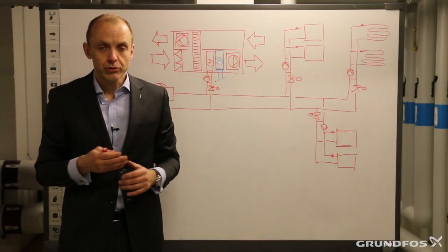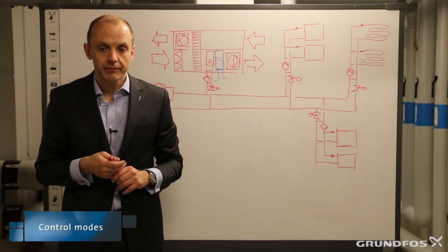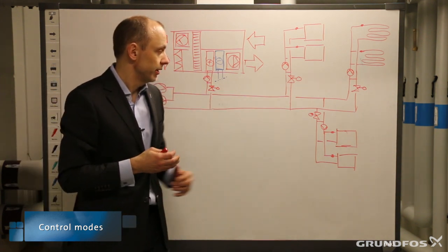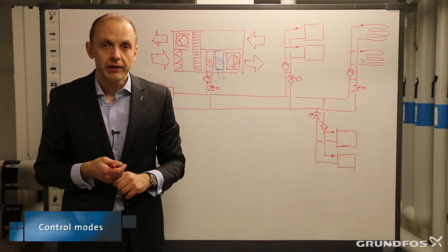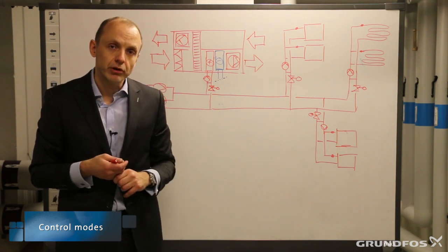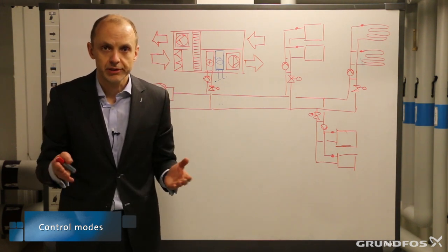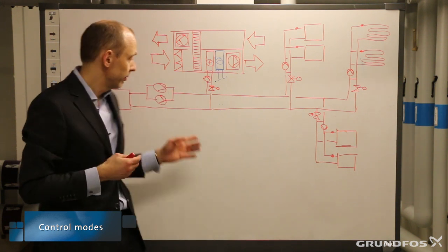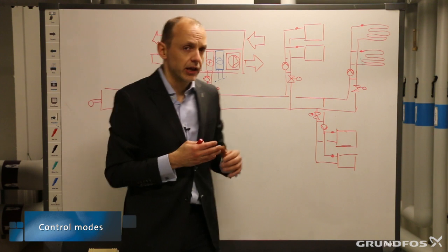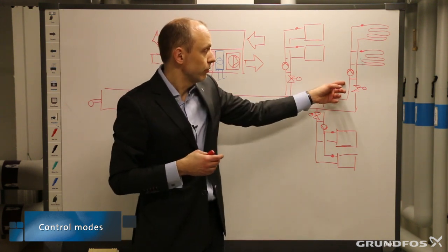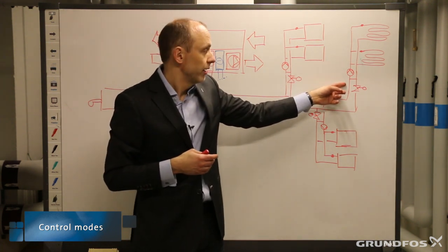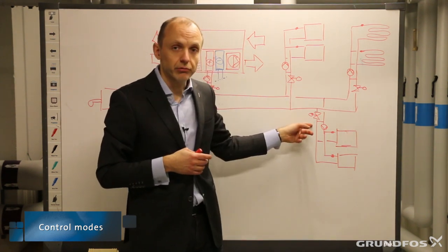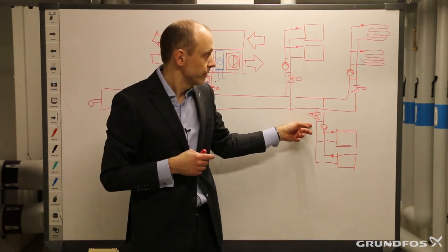So let's talk about control modes. Now we have added four mixing loops in this system, and we have the opportunity to run with different control modes. We are not dependent on the control mode of the main pumps — we can, for example, let this one run with constant pressure while these others are running with proportionate pressure.